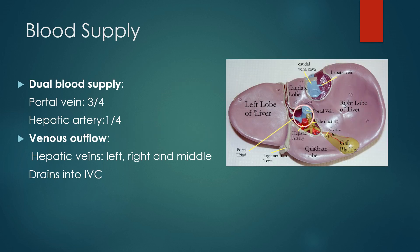The liver has both exocrine as well as endocrine function. Among exocrine functions is the secretion of bile and the degradation of waste products which are delivered back to the intestine for disposal. Endocrine functions of the liver include secretion of albumin, the protein portion of several varieties of lipoproteins, non-immune alpha and beta globulins, prothrombin, and numerous glycoproteins including fibronectin.